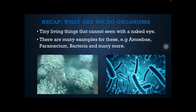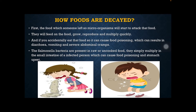That bacteria picture looks very dangerous — I think it's Staphylococcus aureus bacteria. How foods are decayed: first, microorganisms will start to attack the food. They will feed on the food, grow, reproduce, and multiply quickly. If you accidentally eat the food, it can cause food poisoning, which can result in diarrhea, vomiting, and severe abdominal cramps.